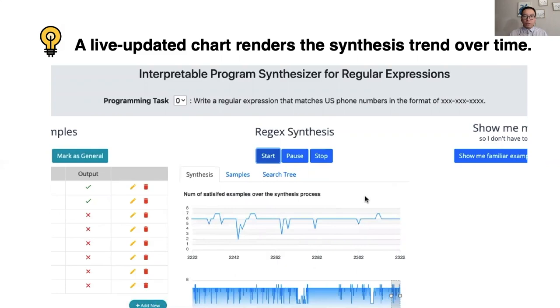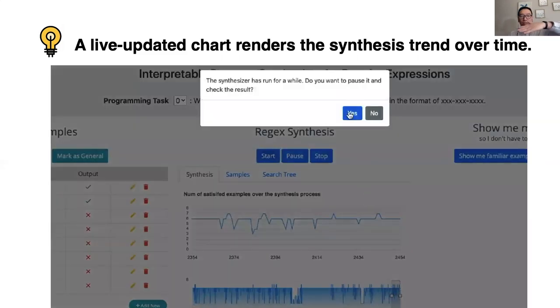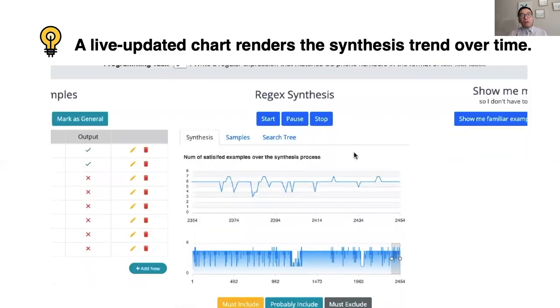If you find something weird, like the line being zigzagging for a while, you can make an early interruption and check what's really going wrong.